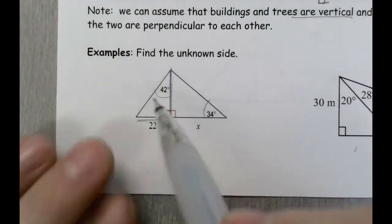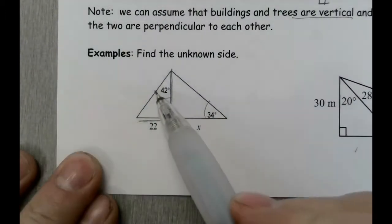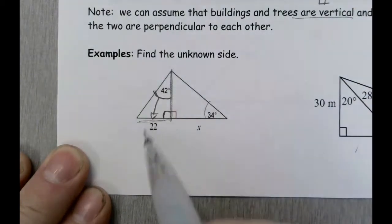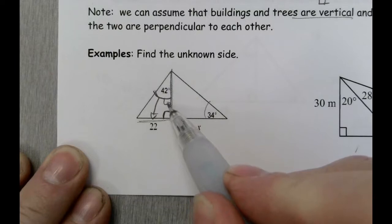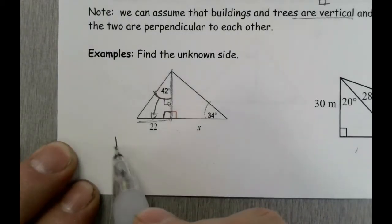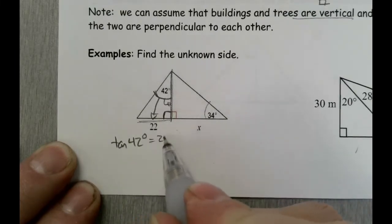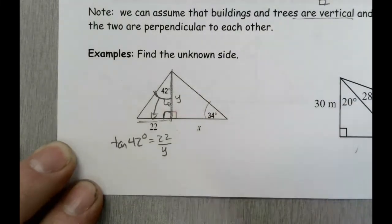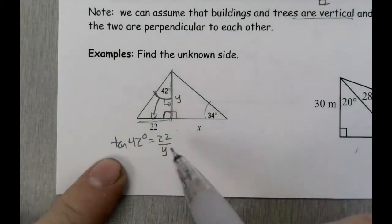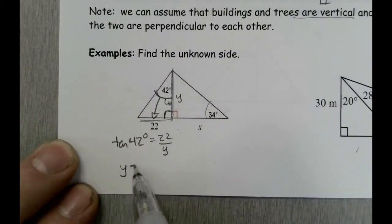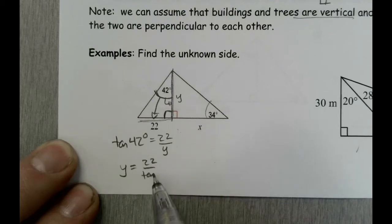Remember how trigonometry works. The first thing I do is identify the reference angle — 42 degrees. That lets me label things. I've given you the side opposite that angle and I'm asking for the side adjacent to it. What trig function combines the opposite side and the adjacent side? The answer is tangent. So the tangent of 42 degrees is going to equal 22 over y. Notice that my unknown is in the denominator, so we swap: y equals 22 over the tangent of 42 degrees.